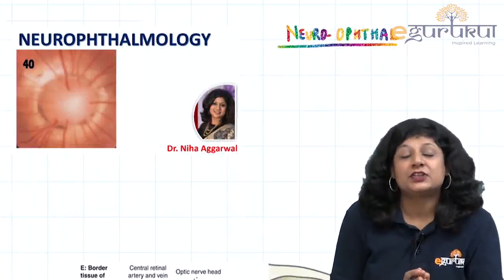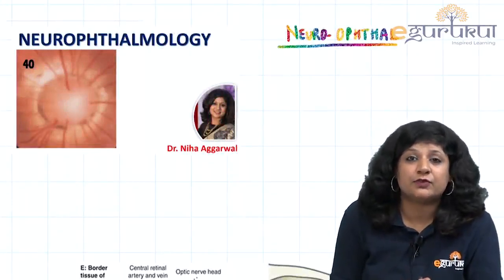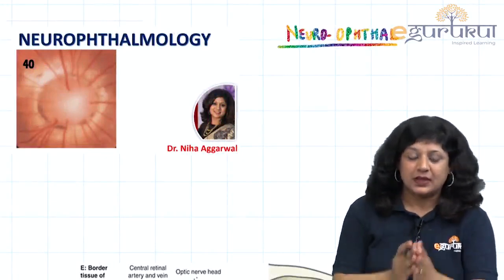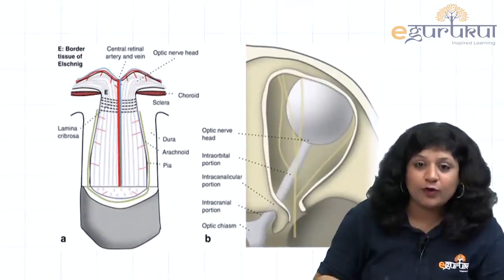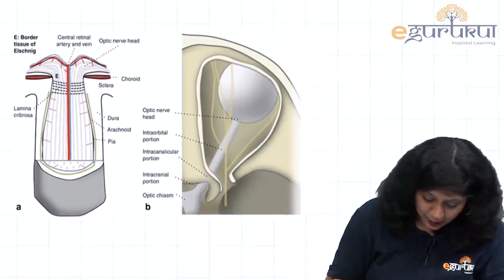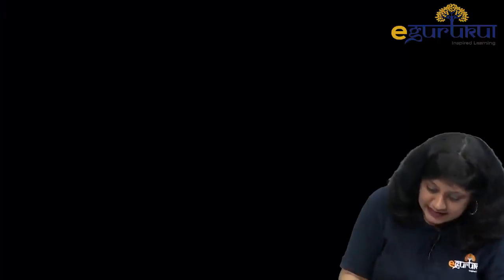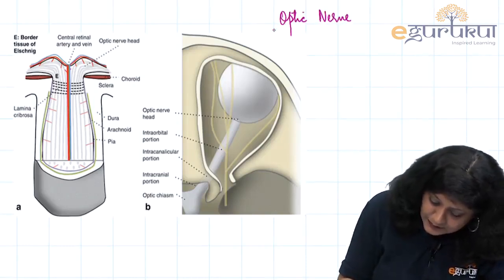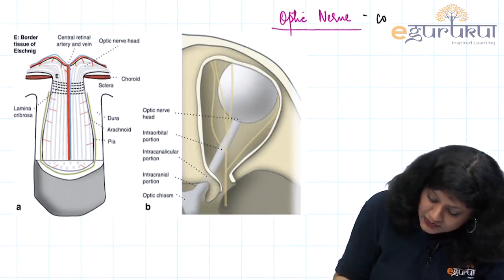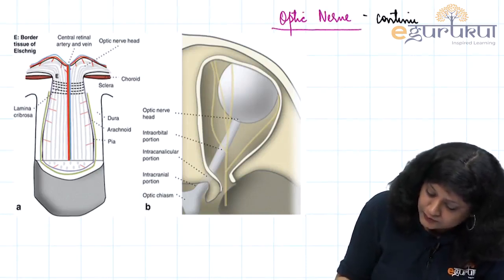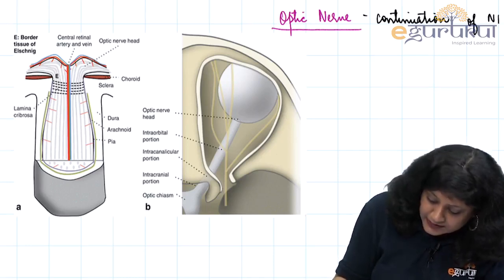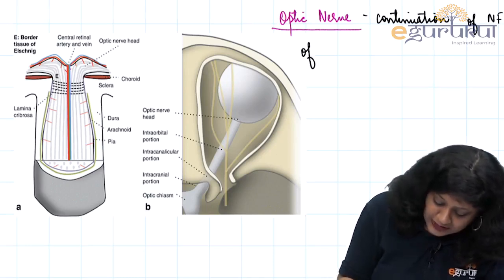In this section, we are going to see one of the important topics, that is Neuro-ophthalmology. Neuro-ophthalmology begins with the optic nerve, so let us see about the optic nerve first. The optic nerve is the continuation of the nerve fiber layer of the retina.